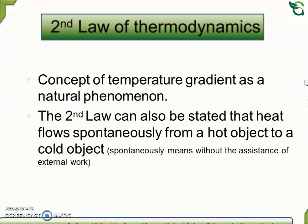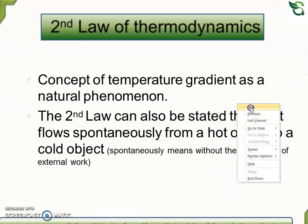Second law of thermodynamics. It is the concept of temperature gradient as a natural phenomenon. The second law can also be stated that heat flows spontaneously from a hot object to a cold object. If you have a hot object and a cold object, then the heat flows from the hot object to the cold object.